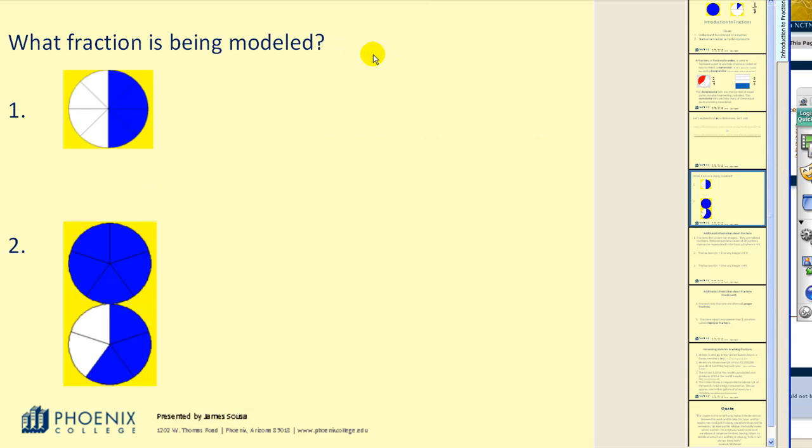Let's see if we can model the fractions that are presented. This first one, we have a circle divided into eight equal parts. So, our denominator, of course, would be eight. And the number of pieces shaded would be four. Another idea we would consider very soon, we can see that four eighths is equivalent to one half.